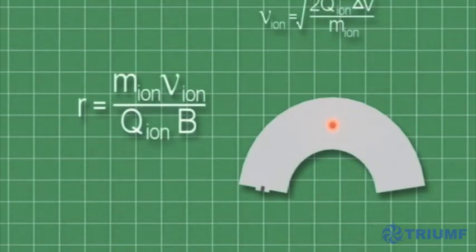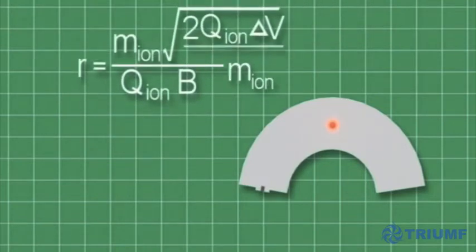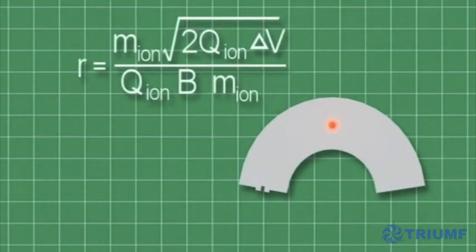We discover that the radius of curvature depends on the mass of the ions, the accelerating potential difference, and the magnetic field.